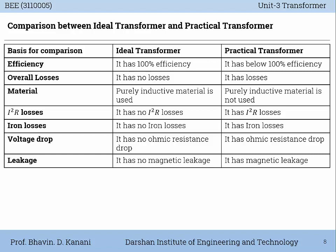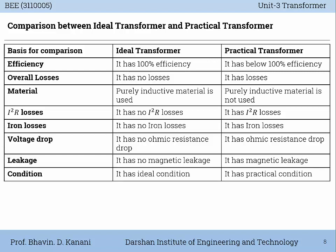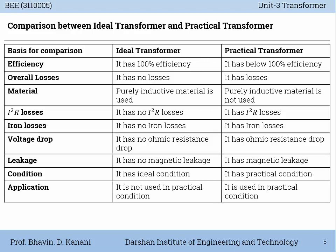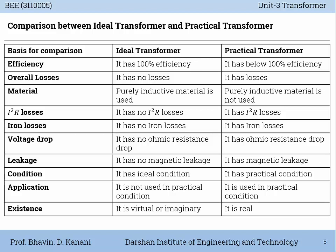In an ideal transformer there is no ohmic resistance drop (IR drop), but in a practical transformer there is some IR drop. In an ideal transformer there is no magnetic leakage, but in a practical transformer there are some magnetic leakages. In an ideal transformer conditions are ideal, but in a real or practical transformer there are no ideal conditions. An ideal transformer is not used in practical conditions because it has no real physical existence, whereas a practical transformer is used in actual real-life applications. So a practical transformer is the real or actual transformer — it is real, while an ideal transformer is virtual or imaginary.